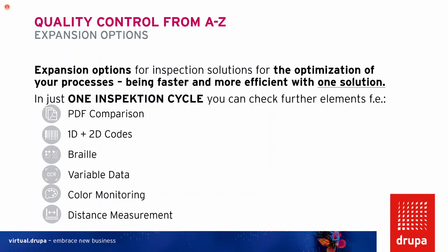In the quality control context you also have expansion options for your print inspection solutions to optimize your process and be faster and more efficient with one solution. For example, with a scanner-based system you can check against the customer proof PDF — PDF comparison. You have the possibility to check 1D and 2D codes ISO compliant, check braille — the height of the dots, correct placement, correct content. In 100% inspection, you can also create variable data in correlation with 1D/2D code reading, monitor color in the Delta E way for stable color monitoring, and in roll-to-roll measure the distance between different items.